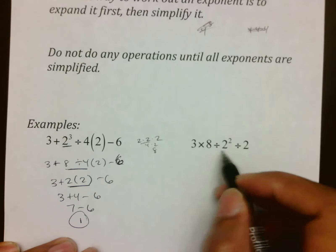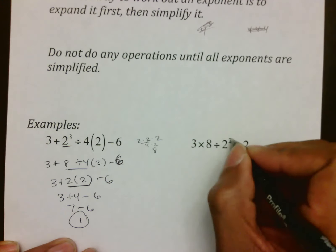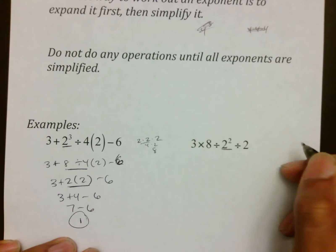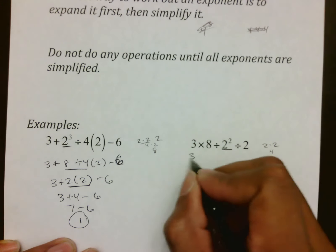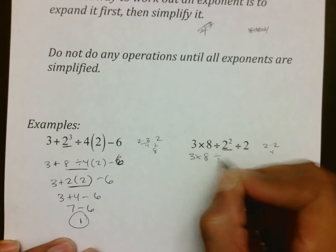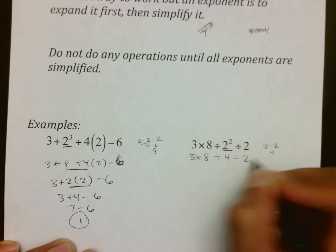So notice, once we got rid of the exponents, it's the same thing we did the last couple lessons, where we just take care of any multiplication or division first, and then deal with our addition and subtraction. Here, 3 × 8 ÷ 2² ÷ 2. First thing I notice is this weird little floating number up there, which I'm going to take over here and expand, making sure I get the answer of 4, and rewrite it as it is.